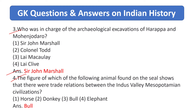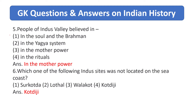Which of the following animals found on the seal shows that there were trade relations between Indus Valley and Mesopotamian civilization? Right answer is bull. What did the people of Indus Valley believe in? Right answer is the mother goddess (mother power).